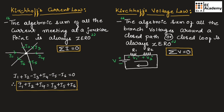Kirchhoff's Voltage Law states that the algebraic sum of all the branch voltages around a closed path or a closed loop is always equal to 0.